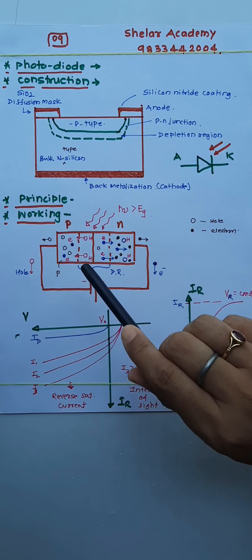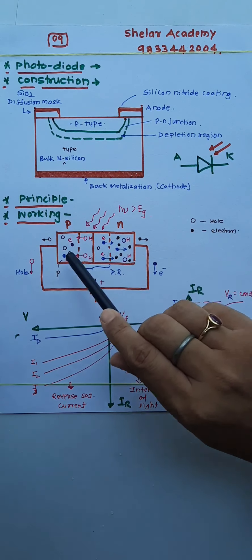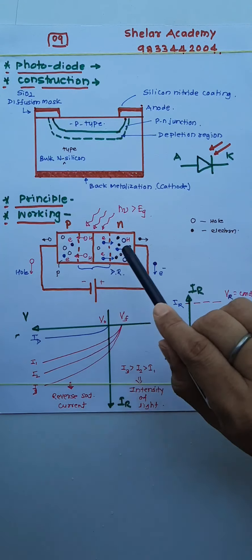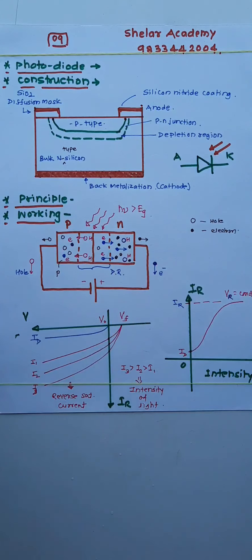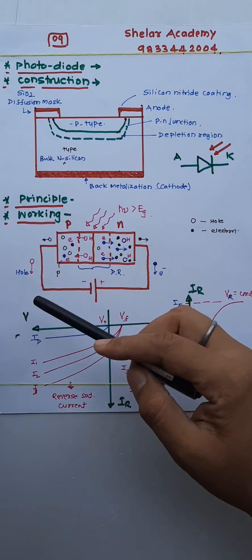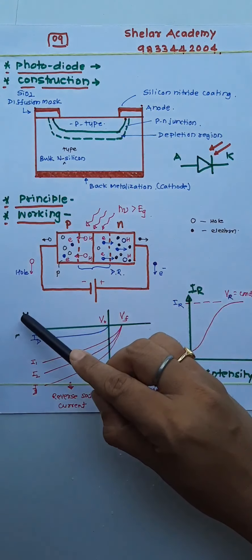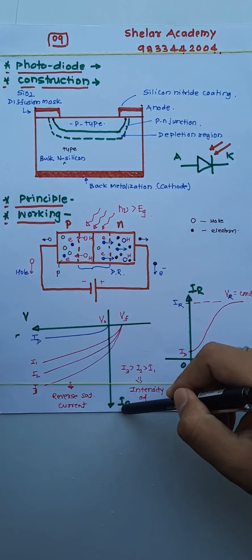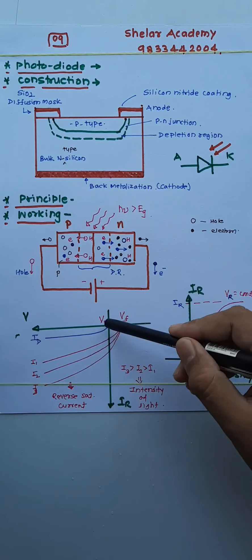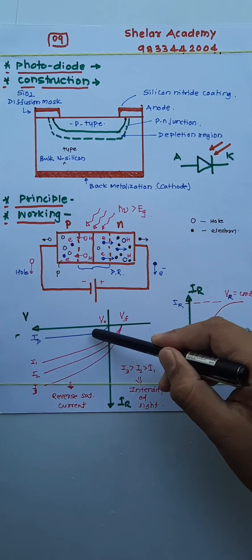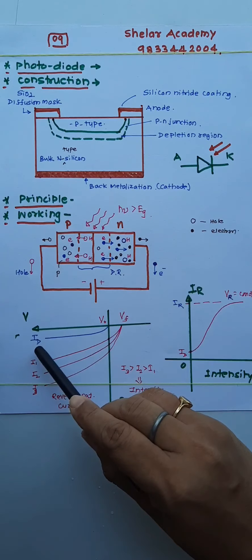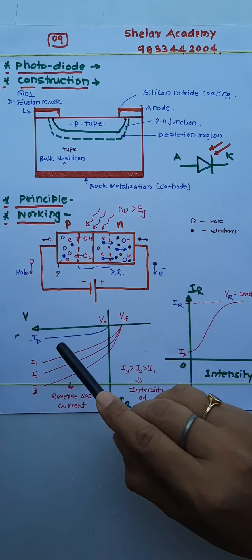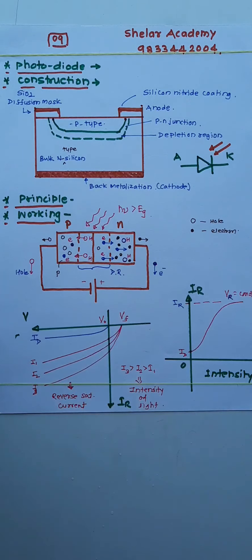The dark current depends upon how many minority carriers are formed in the P region and N region. If you plot a graph of reverse potential difference versus reverse current, this is the graph for dark current — it remains small but constant.